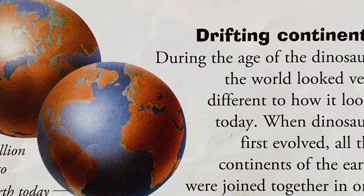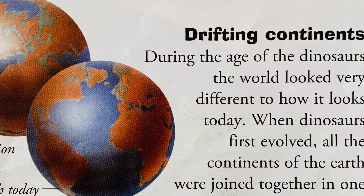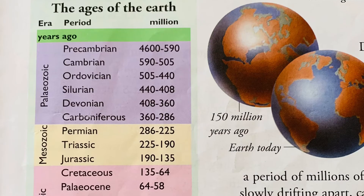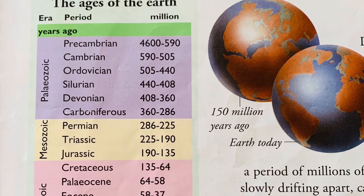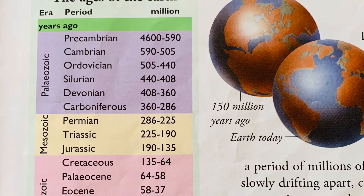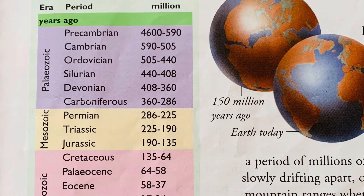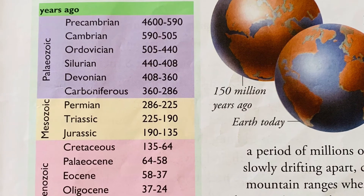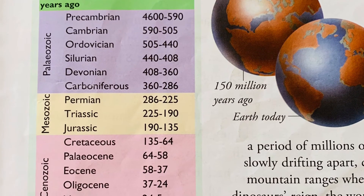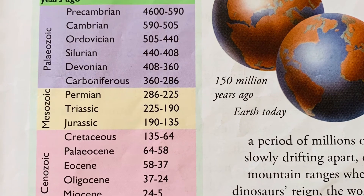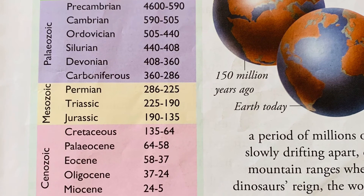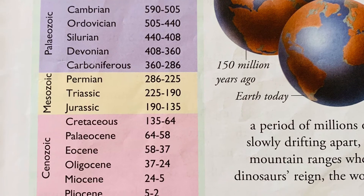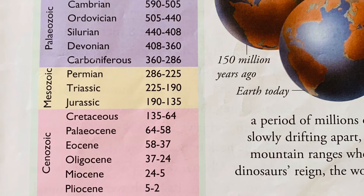During the Age of the Dinosaurs, the world looked very different to how it looks today. When dinosaurs first evolved, all of the continents of the Earth were joined together in one giant landmass. However, over a period of millions of years, the continents have been slowly drifting apart, causing earthquakes and building mountain ranges when they collide. By the end of the dinosaurs' reign, the world looked fairly similar to how it looks today.